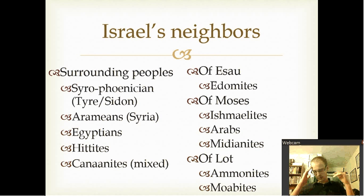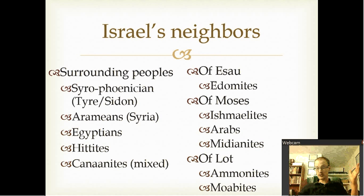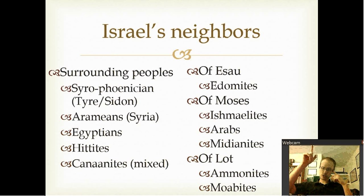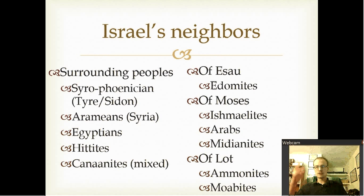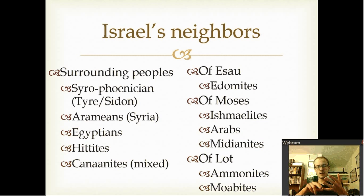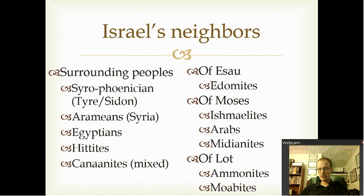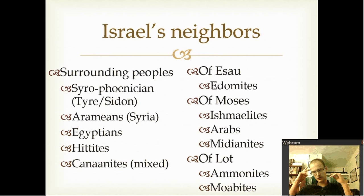Israel had a lot of different neighbors. The Syrophoenicians — Tyre and Sidon — were to the northwest. The Arameans, also called the Syrians or people of Damascus, were to the northeast. The Egyptians were to the southwest. The Hittites were to the extreme north, and some may have been in the line of Canaan as well. The Canaanites were very mixed — the Jebusites, for instance, were part of the Canaanites. Then there were the people of Esau — the Edomites — to their east and southeast, and of Ishmael there were the Ishmaelites, Arabs, and Midianites, some in the Saudi Peninsula and some traveling around.